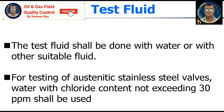What will be the test fluid for the valve hydro test? The test fluid shall be water or another suitable fluid. For testing of austenitic stainless steel valves, water with chlorine content not exceeding 30 ppm — in some standards it is also 50 ppm — shall be used.